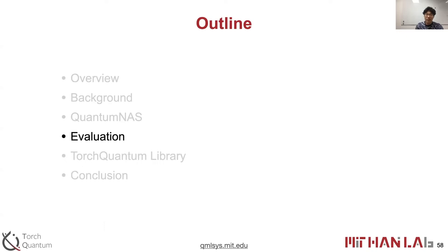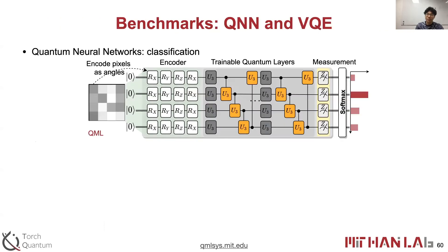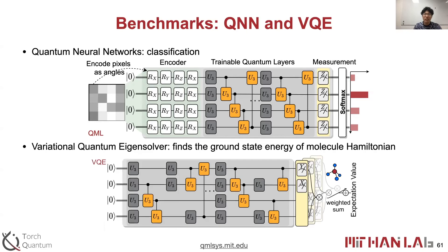Now we go to the evaluation section. For benchmarks, we use classification tasks for quantum machine learning, including MNIST, Fashion MNIST, and Vowels. For VQE, we use five molecules. We run experiments on IBM QE devices with 5 to 65 qubits and 8 to 128 quantum volume. Quantum neural network benchmarks perform classification tasks by using rotation gates to encode classical pixels to quantum states, with trainable quantum layers, measurement for classical outputs, and final softmax for classification probabilities. The variational quantum eigensolver finds the ground state energy of target molecules, where the PQC prepares the quantum states and measurement bases are obtained according to the target molecule.